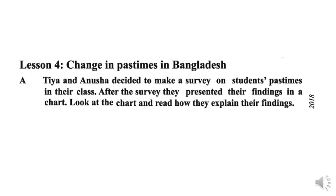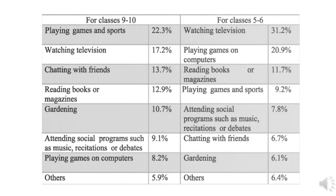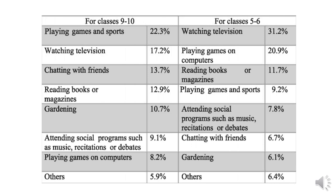Now let's move on to Lesson 4: Change in Pastimes in Bangladesh. Tia and Anusha decided to make a survey on students' pastimes in their class. After the survey, they presented their findings in a chart. Look at the chart and read how they explained their findings. There is a chart on the slide and it contains four columns. There are columns for the names of pastimes such as playing games and sports, watching television, chatting with friends, reading books or magazines, gardening, attending social programs, playing games on computers, and others. There are also columns for the percentages of students involved in these activities.